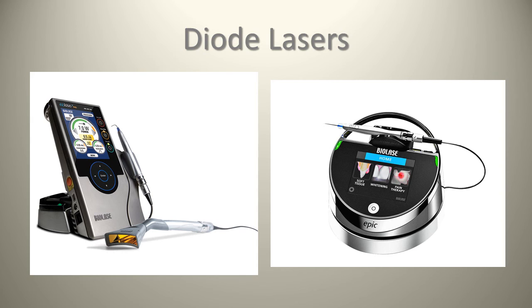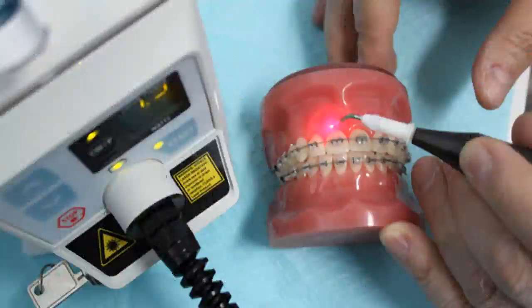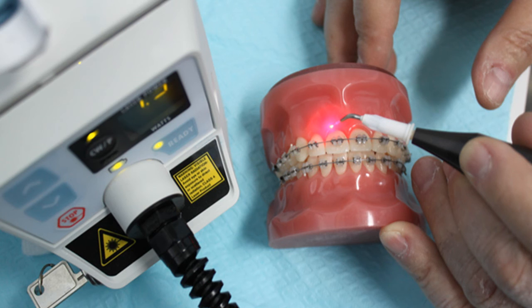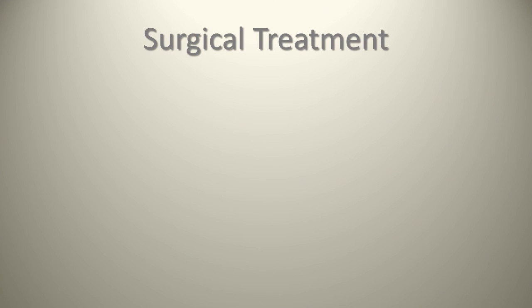Diode lasers work well for troughing around teeth for crowns, treating ulcers and cold sores, and removing soft tissues for frenectomies. However, their application for treating peri-implantitis is limited. When used on the gingiva, they can biostimulate tissue and promote eschar formation, making tissue more robust in preventing bacterial infiltration.